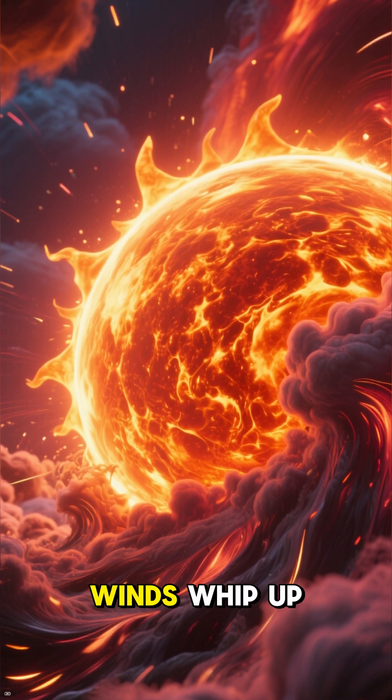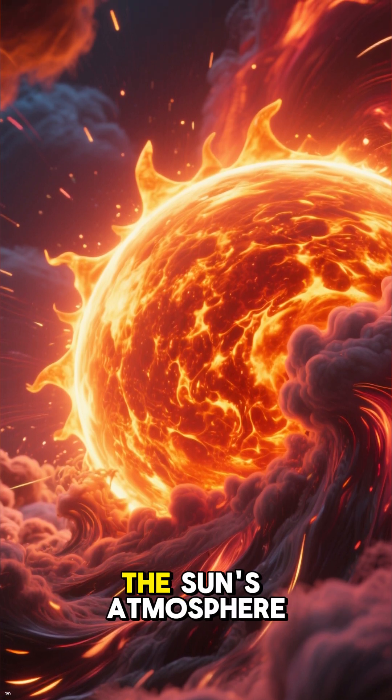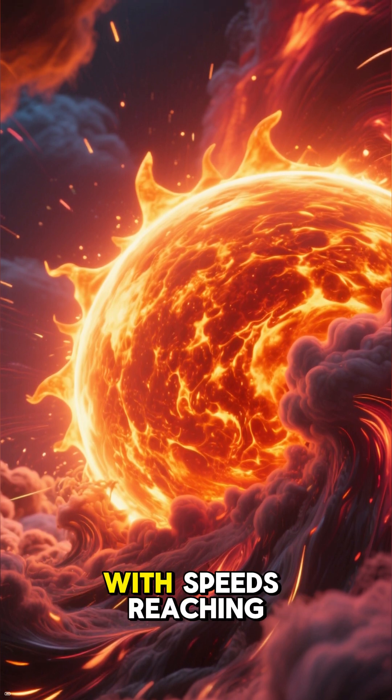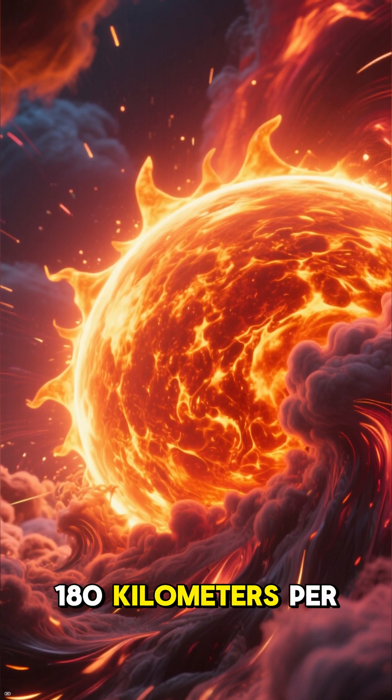And just like when Earth's wild winds whip up giant storms, the Sun's atmosphere has giant storms too. These storms can last for years with speeds reaching 180 kilometers per second.